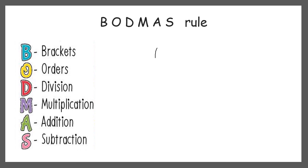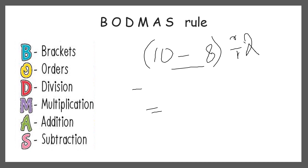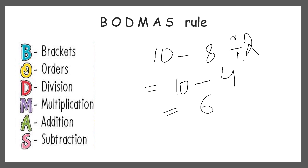For example, consider the question: 10 minus 8 divided by 2, with brackets around 10 minus 8. We should solve the bracket first: 10 minus 8 is 2, and 2 divided by 2 is 1. What happens if the bracket was not there? Without brackets, we do division first according to DMAS rule: 8 divided by 2 is 4, and 10 minus 4 is 6. The answer is different — that is why this rule is very important. Whenever a bracket is present, we solve the bracket first, then division, multiplication, addition, and subtraction.